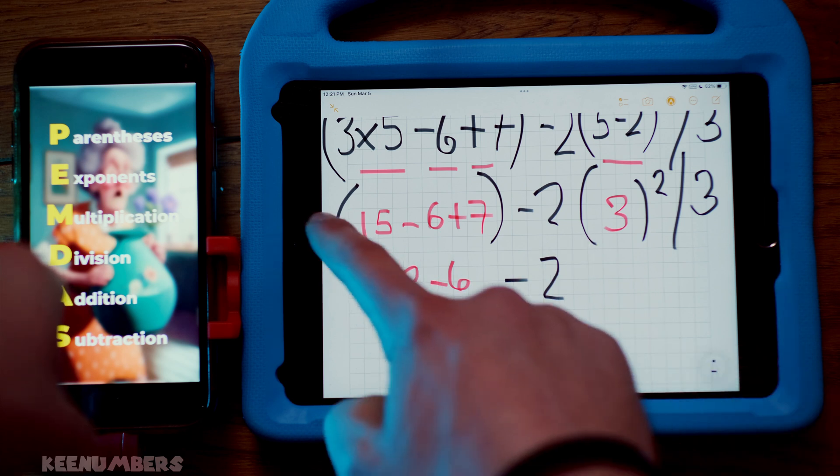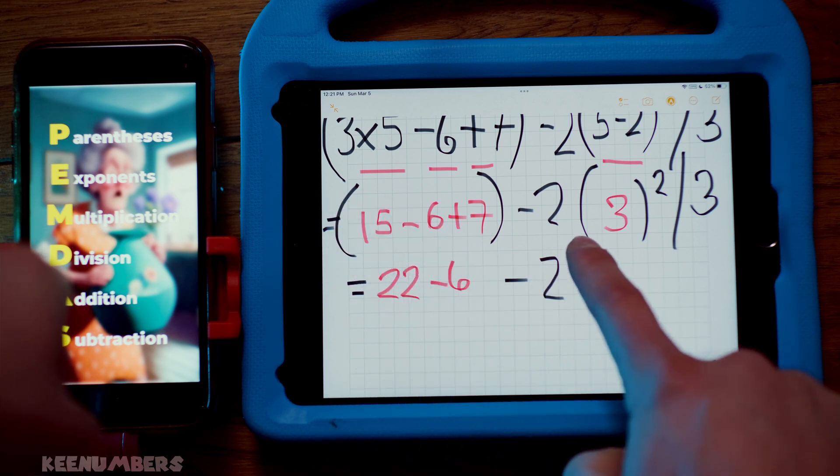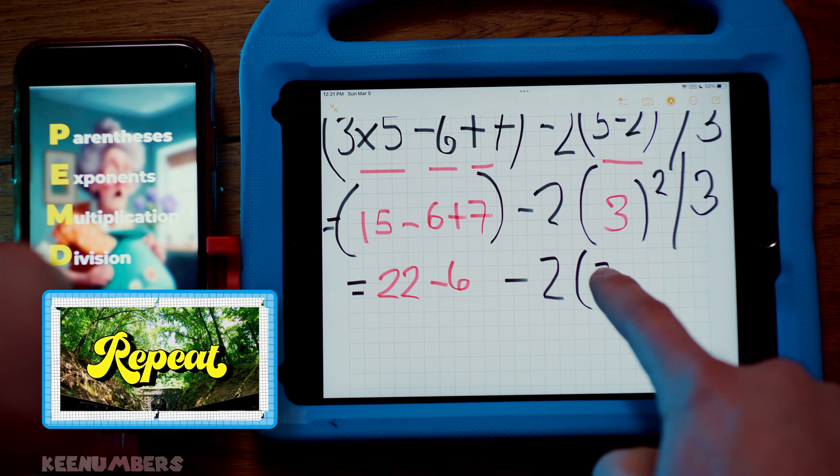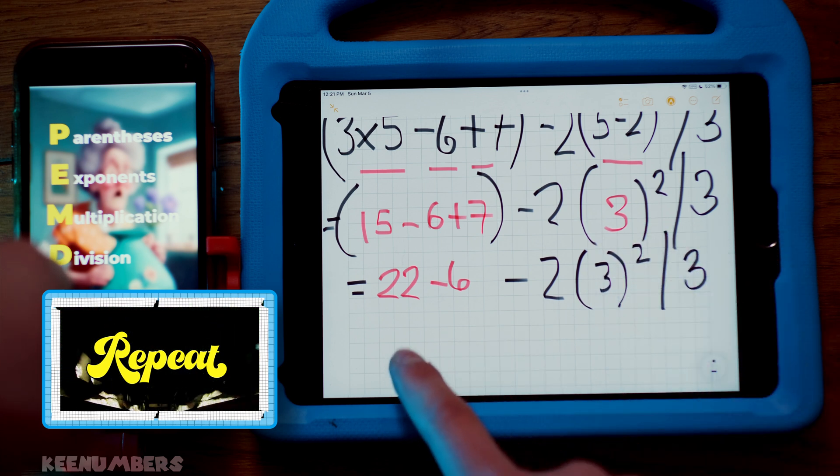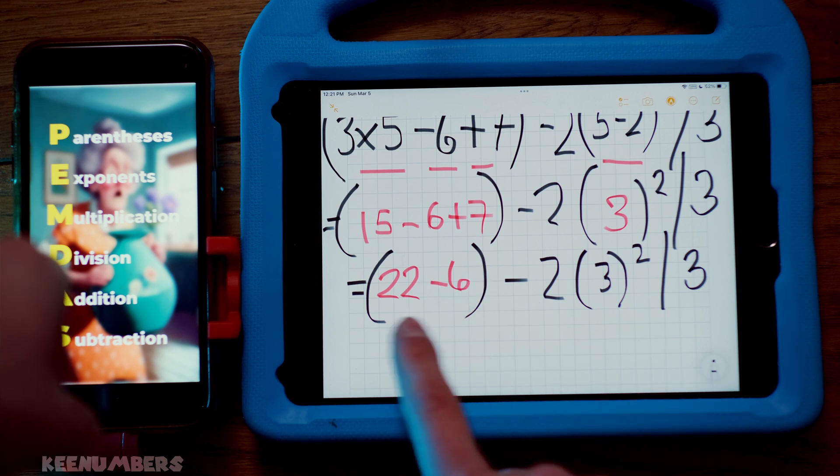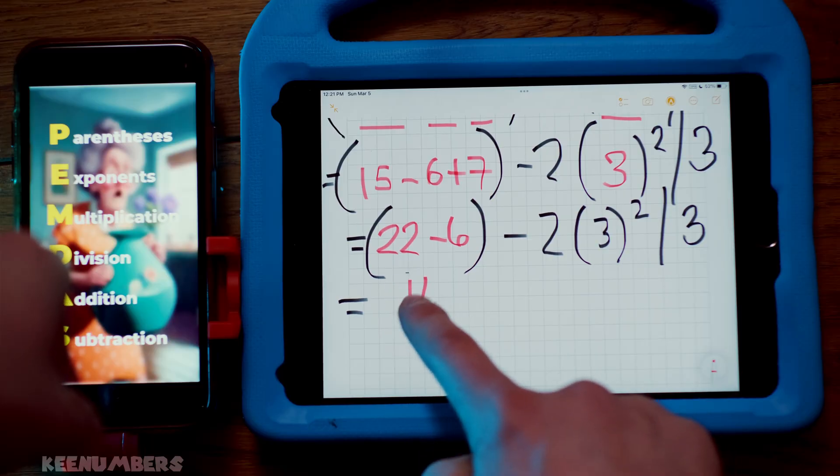We'll do that in the next step so that you don't get lost. But as always, pause, rewind, fast forward, get a snack, do whatever you gotta do. Two times three, you're gonna square that and then you're gonna divide by three. All right, well, what's 22 take away six? Hey, we're getting somewhere, aren't we? 22 minus six, that's 16.